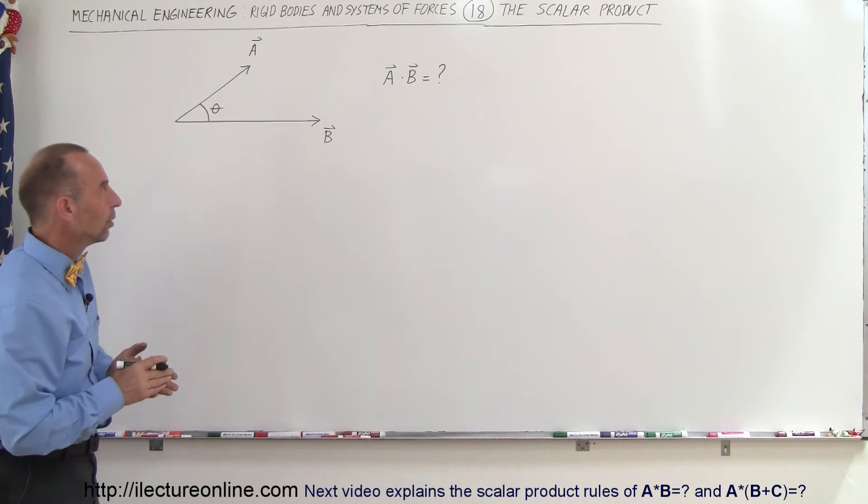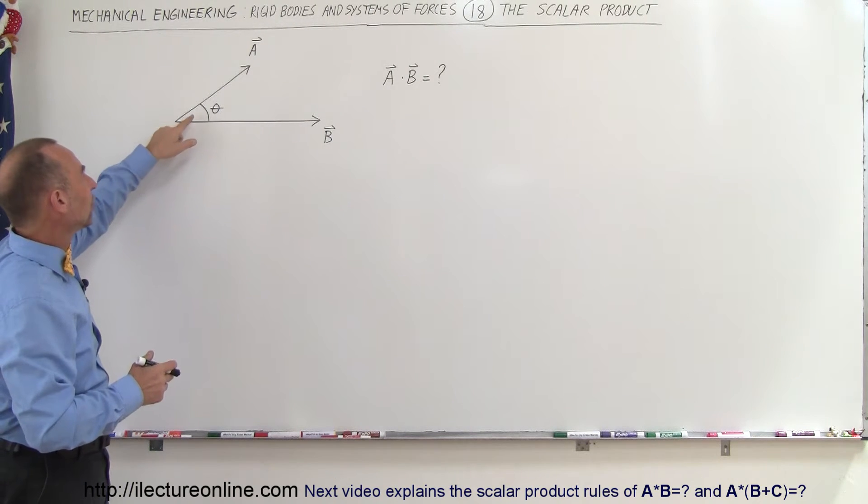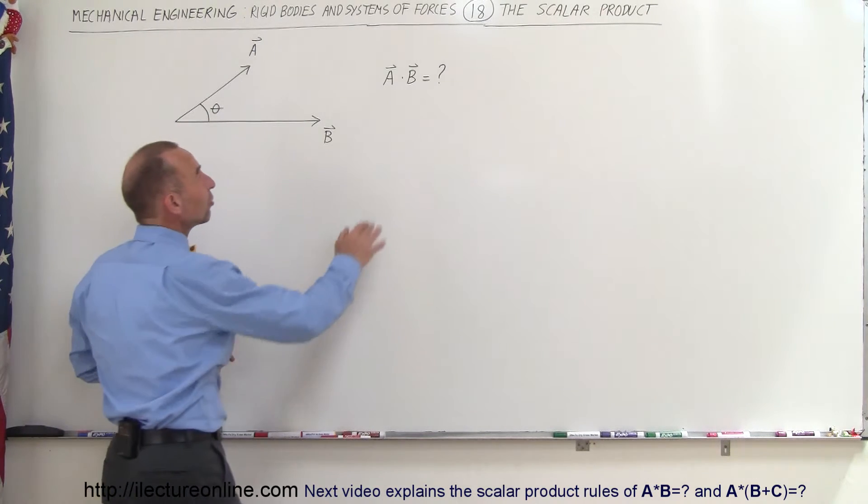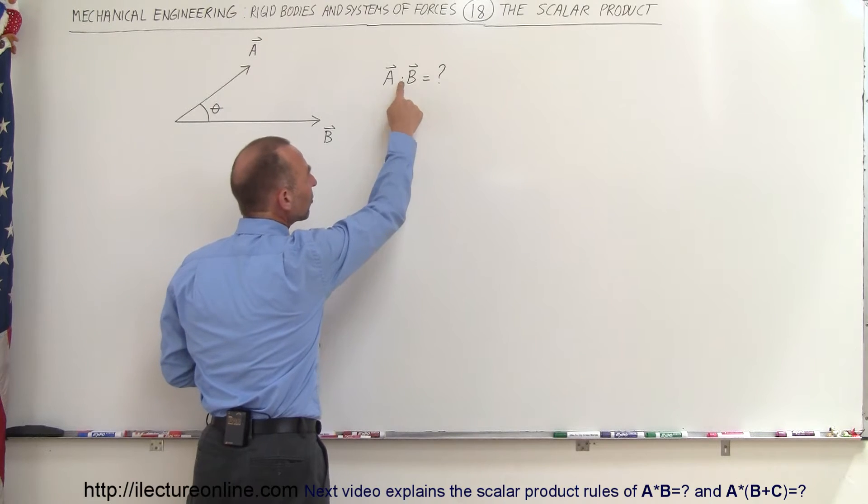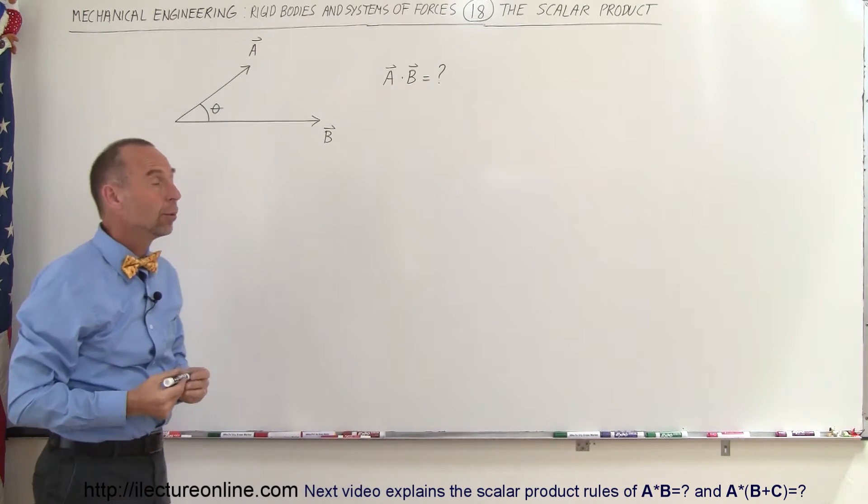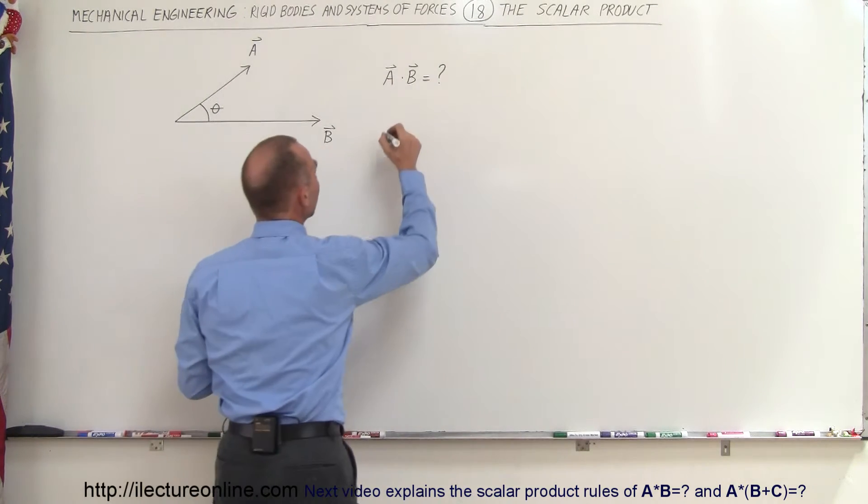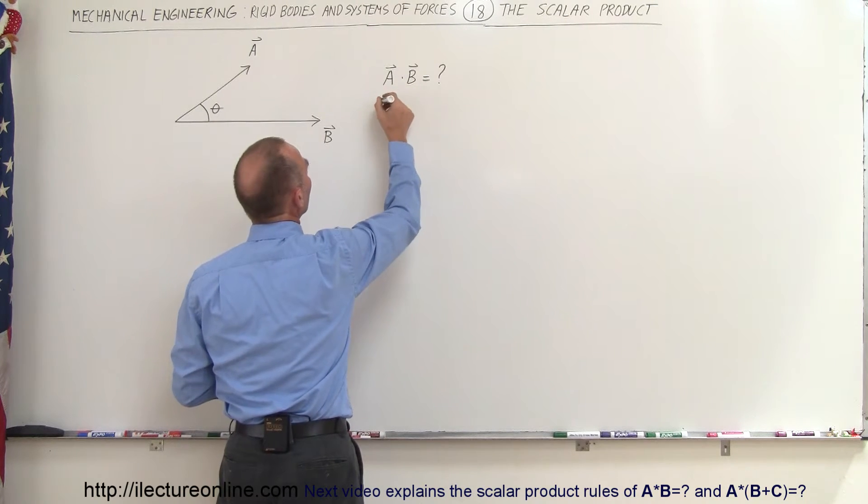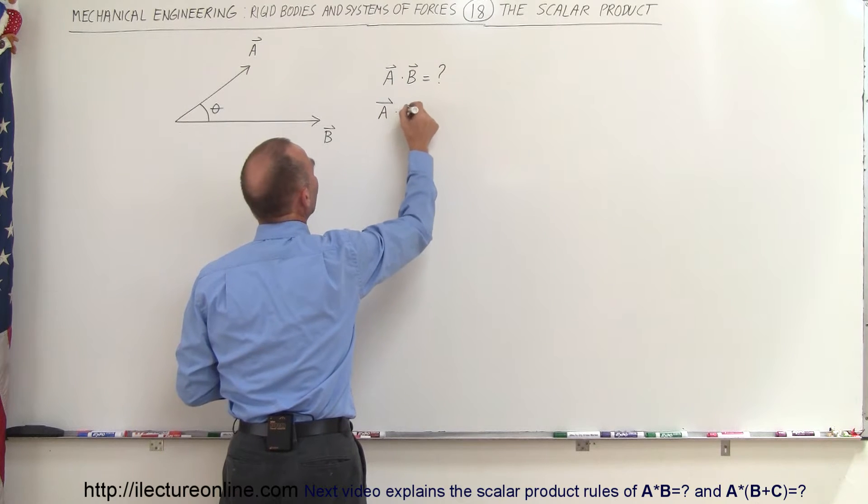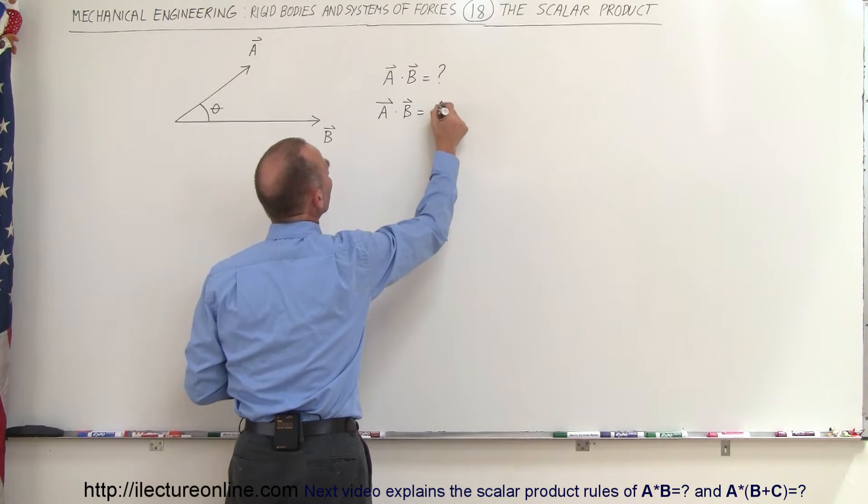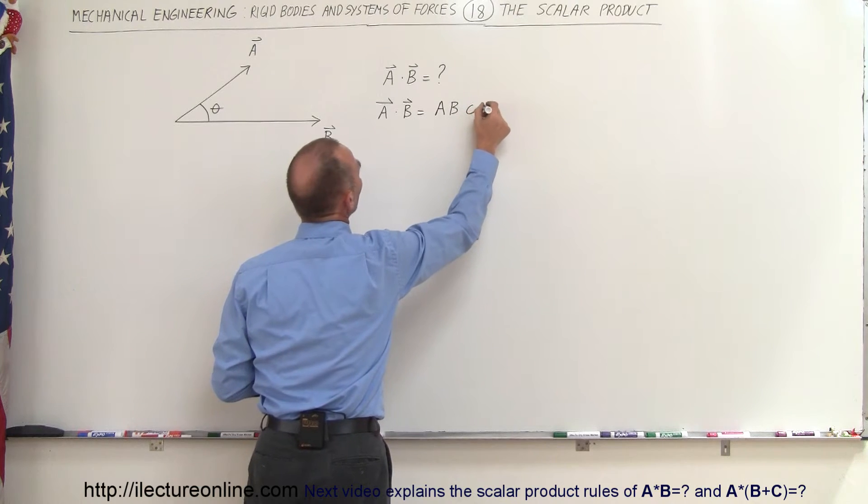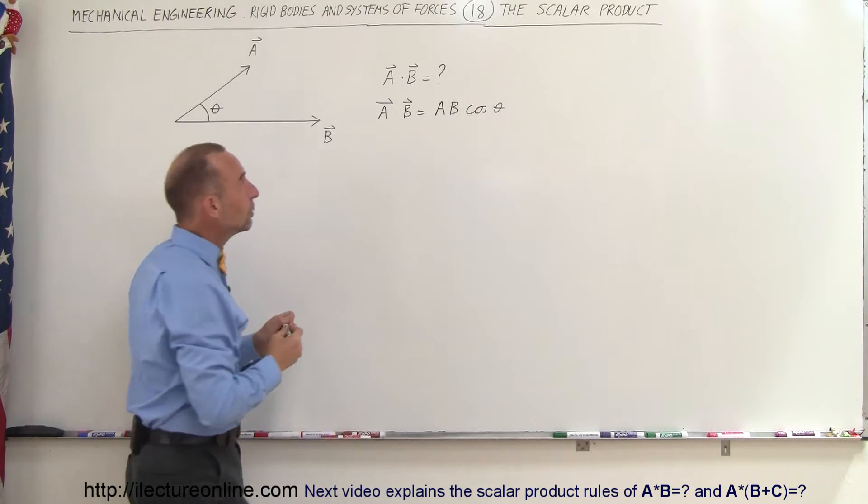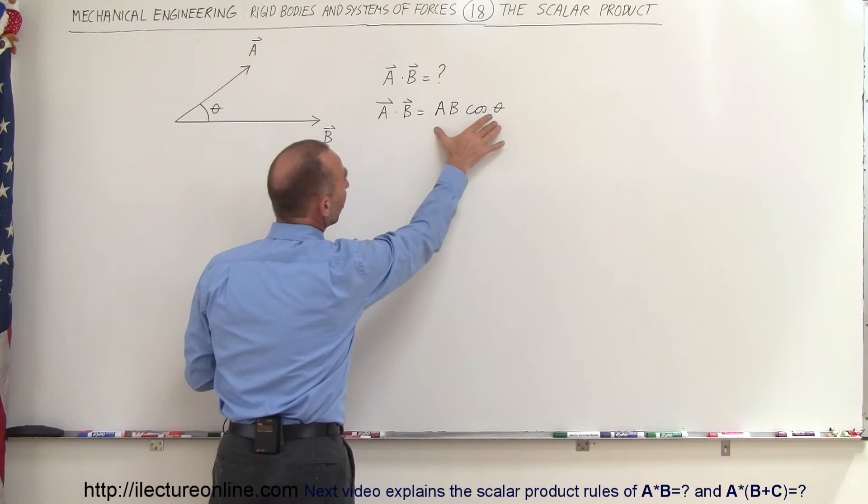So here we have two vectors, and there's an angle of theta between them. What do we mean by the scalar product A dot B? Notice we use a dot instead of the cross symbol. Well, it turns out by definition, A dot B, as we say sometimes, or the dot product or scalar product between A and B, is equal to the magnitude of A times the magnitude of B times the cosine of the angle between the two vectors. So notice that when we do a scalar product, the result is a scalar.